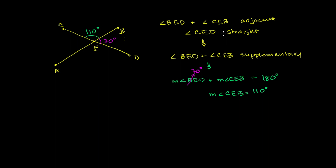So we figured out that this right over here is 110 degrees. If you did this problem quickly in your head, you'd say: this is 70 degrees, this angle plus this angle would be 180 degrees, so this has to be 110 degrees. So now let's use the same logic to figure out what angle CEA is.